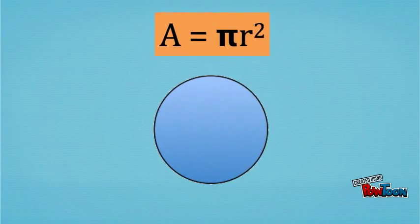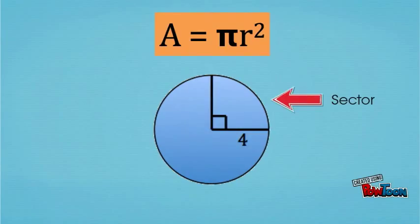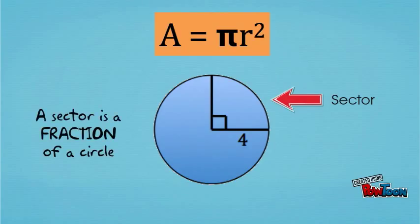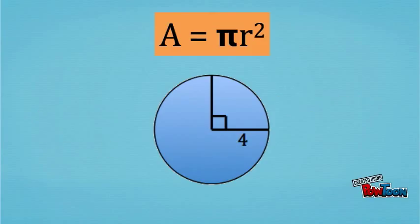Before we try to solve this word problem, let's take a look at some simpler examples. The formula for the area of a circle is A equals pi r squared. A sector is what we call a portion of the circle, or in other words, a sector is a fraction of a circle. So if we want to find the area of a sector, or of a slice of pizza, we need to know what fraction it is of the entire circle.